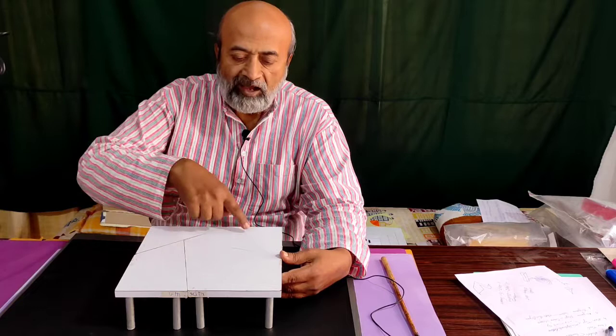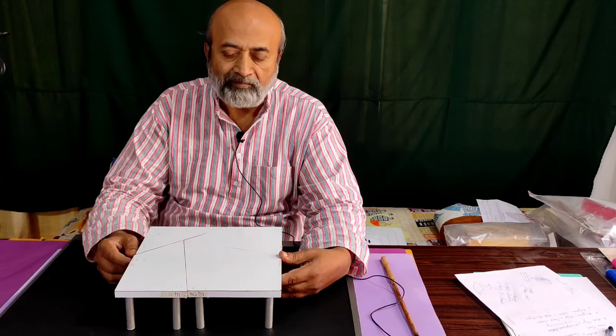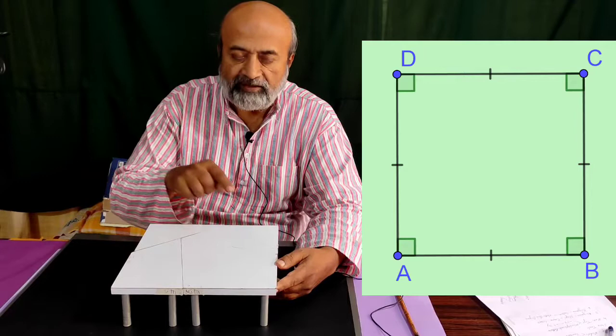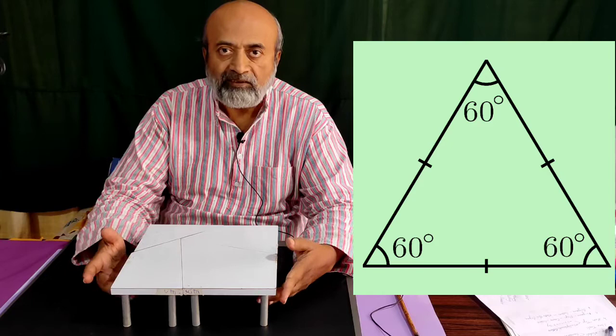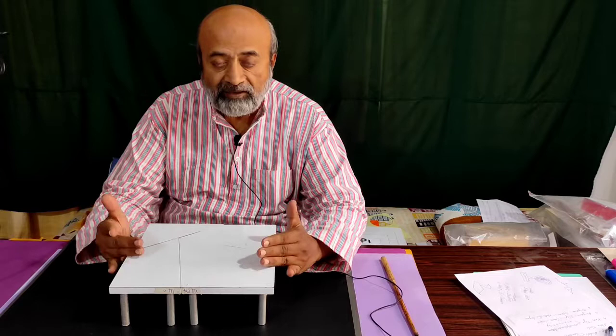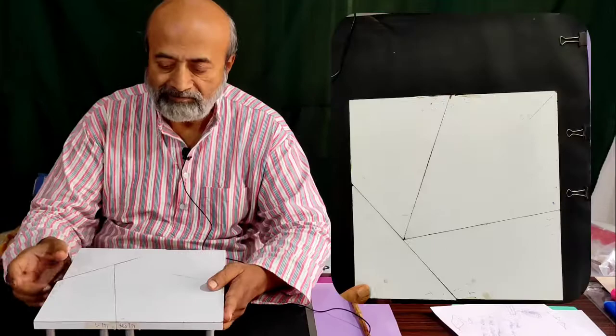Now let us see the Henry Dudeny dissection — how this square gets converted into an equilateral triangle. As we know, this square has four sides and four angles: 90, 90, 90, 90. In an equilateral triangle we should have angles of 60, 60, 60, as well as three sides of equal length. So let us see how this toy is dissected and reassembled into an equilateral triangle.